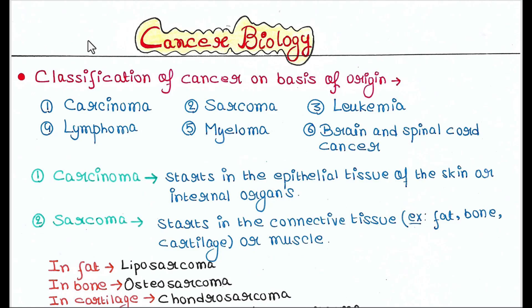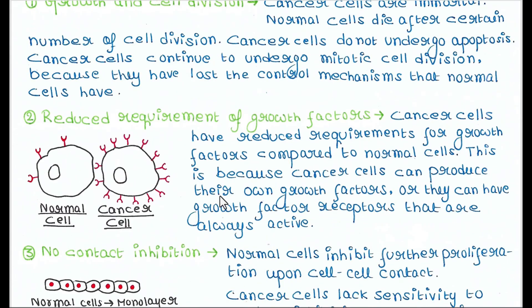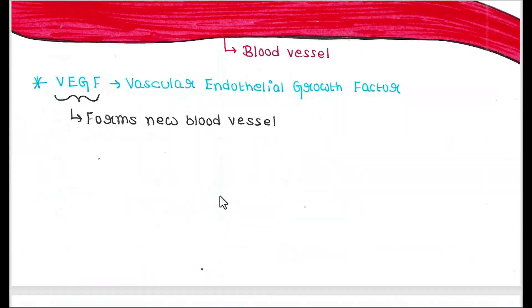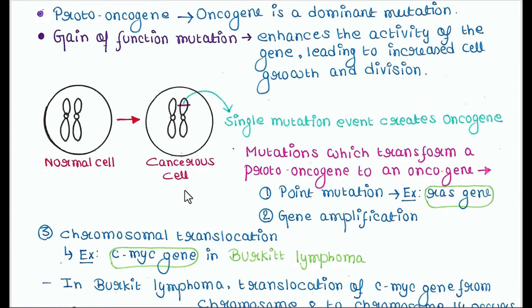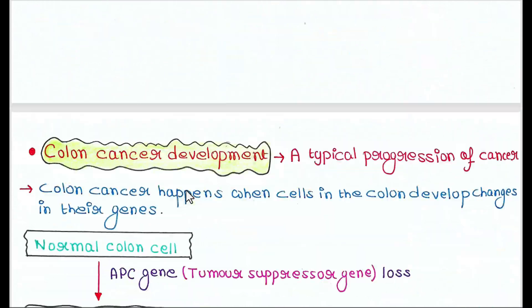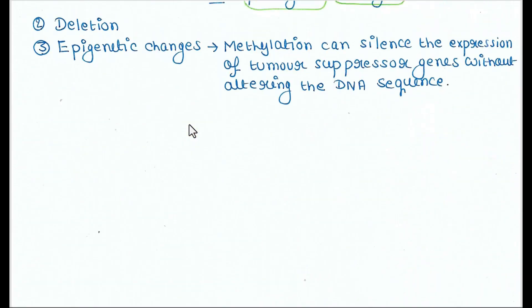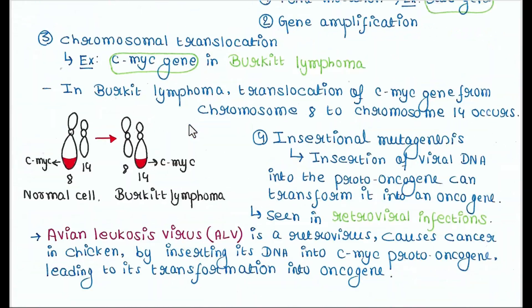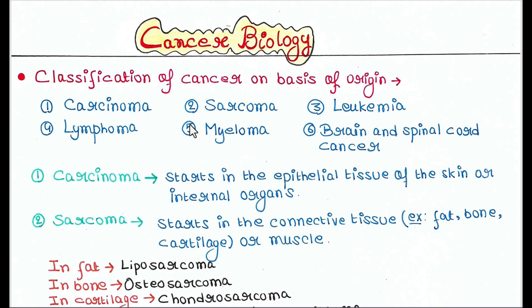We are starting a cancer biology series and it will include four topics: classification of cancer, properties of cancer, causes of cancer, and colon cancer development. Today we will talk about the first topic — classification of cancer.